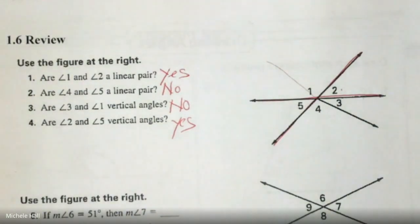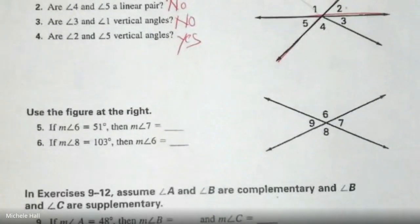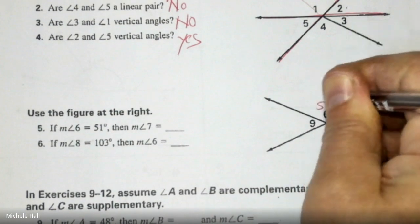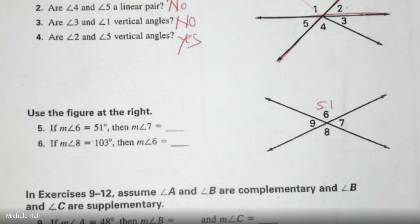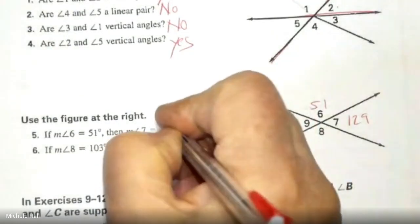Grab a calculator. Okay, keep going. Do 5 and 6. If Angle 6 is 51, how much is Angle 7? What would you get? 129. 180 minus 51 carry... Good. So that would be 129.